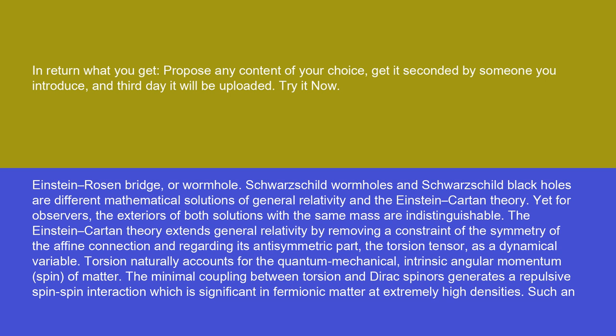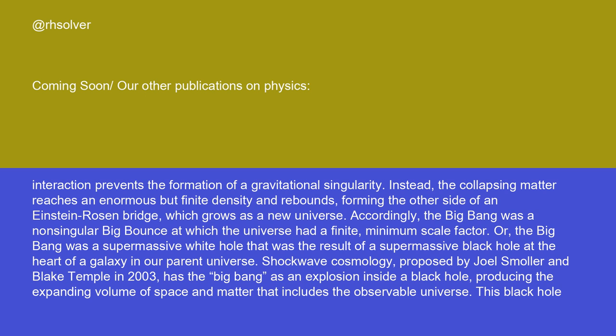The minimal coupling between torsion and Dirac spinors generates a repulsive spin-spin interaction, which is significant in fermionic matter at extremely high densities. Such an interaction prevents the formation of a gravitational singularity. Instead, the collapsing matter reaches an enormous but finite density and rebounds, forming the other side of an Einstein-Rosen bridge, which grows as a new universe. Accordingly, the Big Bang was a non-singular Big Bounce at which the universe had a finite, minimum scale factor.